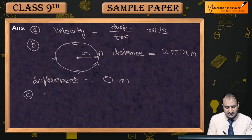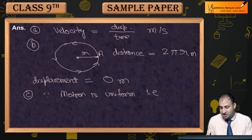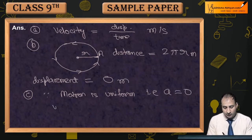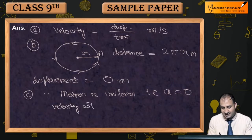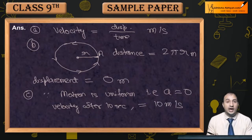Since motion is uniform, that means acceleration is 0 — a = 0. So therefore, velocity after 10 seconds क्या होगी — वो भी 10 meter per second ही होगी, क्योंकि there is no acceleration।